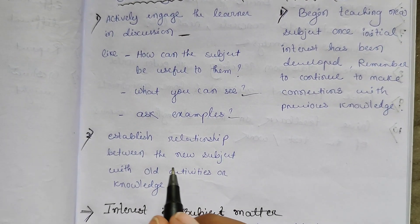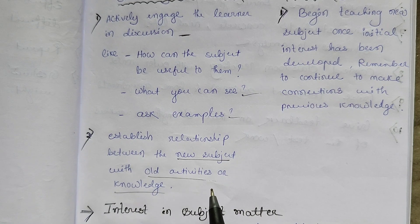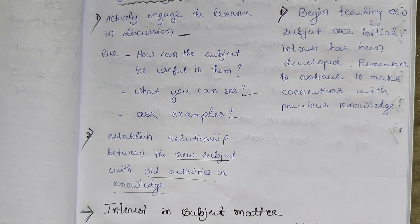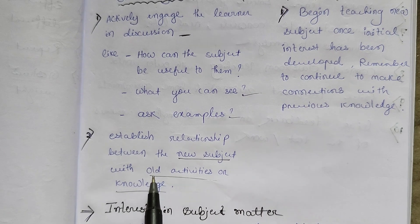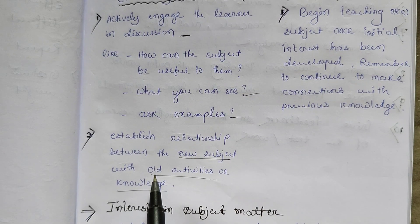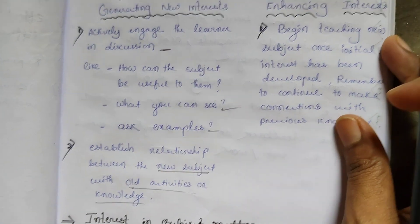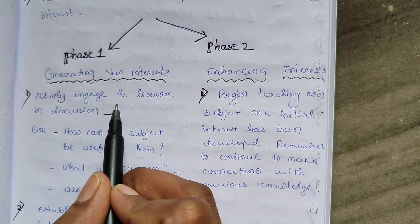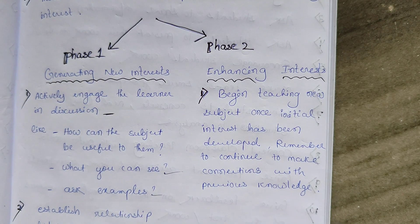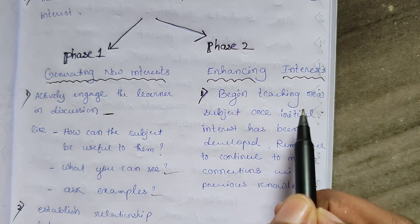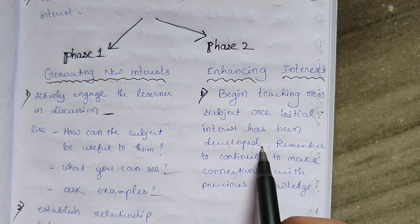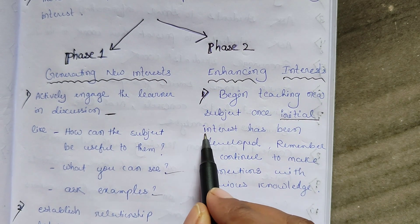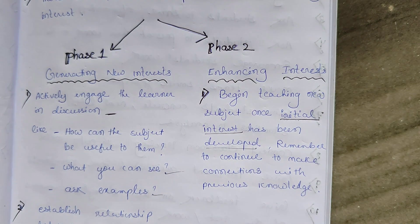Establish a relationship between the new subject and old activities and previous knowledge. You will create a connection between the new subject and students' previous skills and knowledge. Phase Two — enhancing interest — means once you have generated initial interest, begin teaching the new subject. Remember to continue making connections with previous knowledge throughout the class.